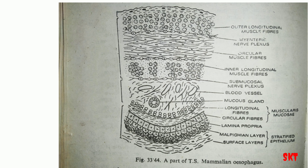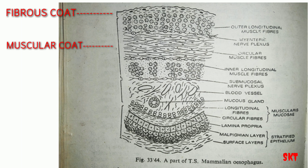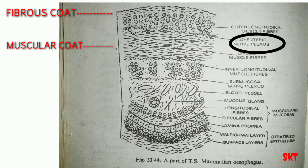The first coat is the fibrous coat, which is a connective coat. The next is the muscular coat, comprising three layers: two longitudinal muscle fiber layers and one circular muscle fiber layer in the middle. Between the outer two layers is a myenteric nerve plexus, a network of nerve cells and nerve fibers.